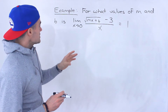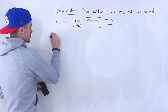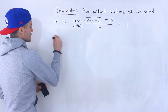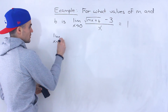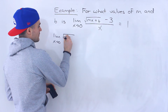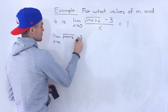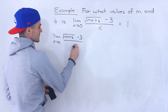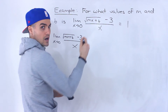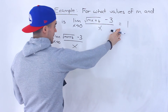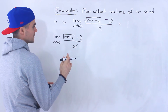I'm going to rewrite it over here. So we've got the limit as x approaches 0 of the square root of mx plus b minus 3, all over x. I'm just going to work with this left side of the equation. Notice this is an equation because there's an equal sign here.